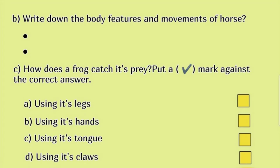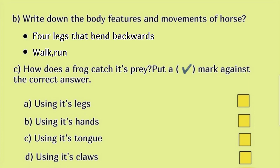B. Write down the body features and movements of horse. Answer: Four legs that bend backwards; movements: walk, run. C. How does a frog catch its prey? Answer: Using its tongue.